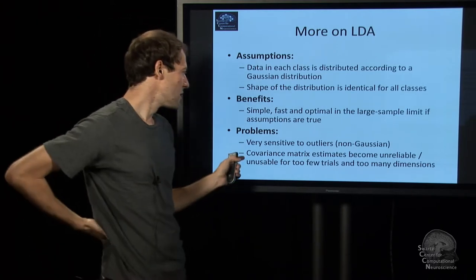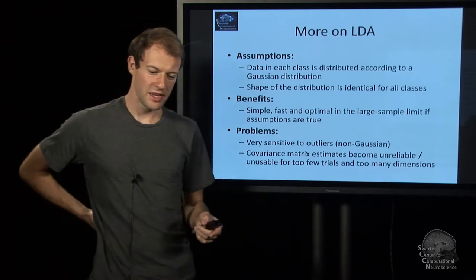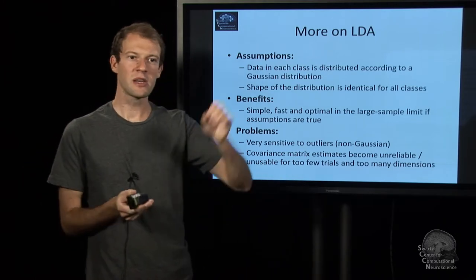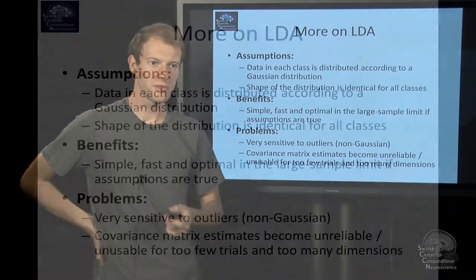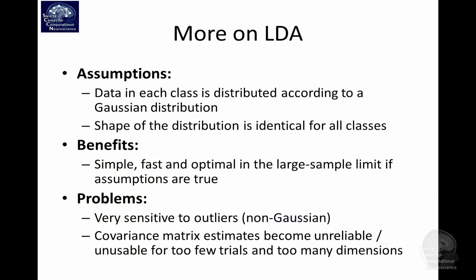The benefit is that it's very simple, very easy to implement, and in the limit of infinitely many samples, and if these assumptions are fulfilled, it's the optimal classifier. But the issue is that it makes this Gaussian assumption. If you have one outlier that can break your result. Also it can be very hard to estimate these covariance matrices, sigma 1 and sigma 2, if you have too few trials or too many dimensions. That's called the curse of dimensionality here.